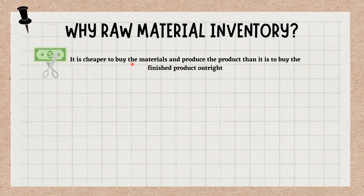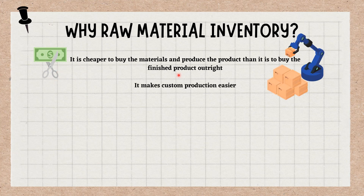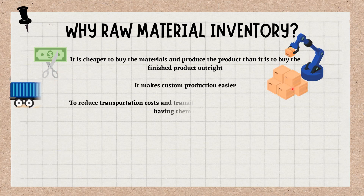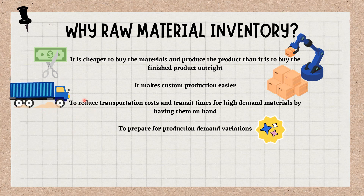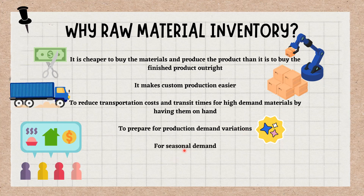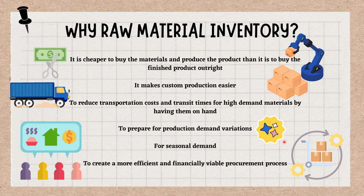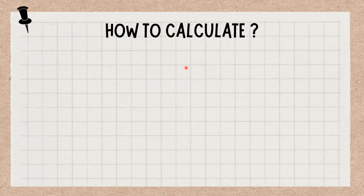It is cheaper to buy their materials and produce the product than it is to buy the finished product outright. It makes custom production easier. To reduce transportation costs and transit times for high-demand materials by having them on hand. To prepare for production demand variations. For seasonal demand. To create a more efficient and financially viable procurement process. To implement the manufacturing process within the business, you will need to have your inventory management under control.